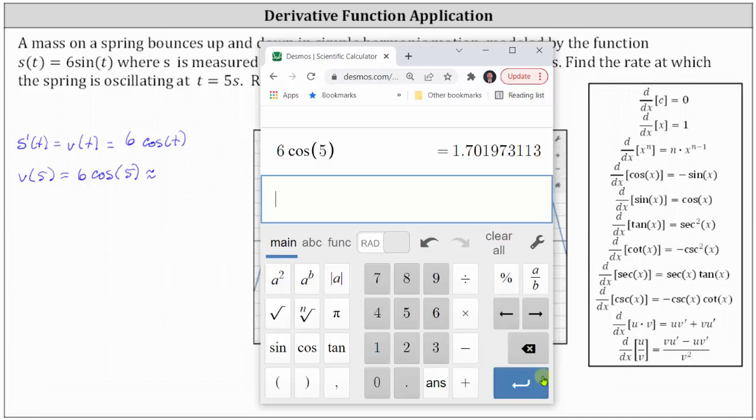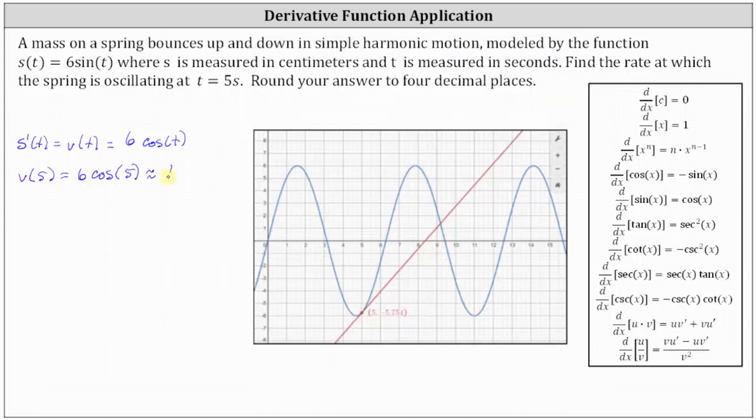Notice we have a 7 in the fifth decimal place, which indicates you round up. And because we have a 9 in the fourth decimal place, to four decimal places the value rounds to 1.7020. We do need the zero in the fourth decimal place because this does indicate we rounded to four decimal places.